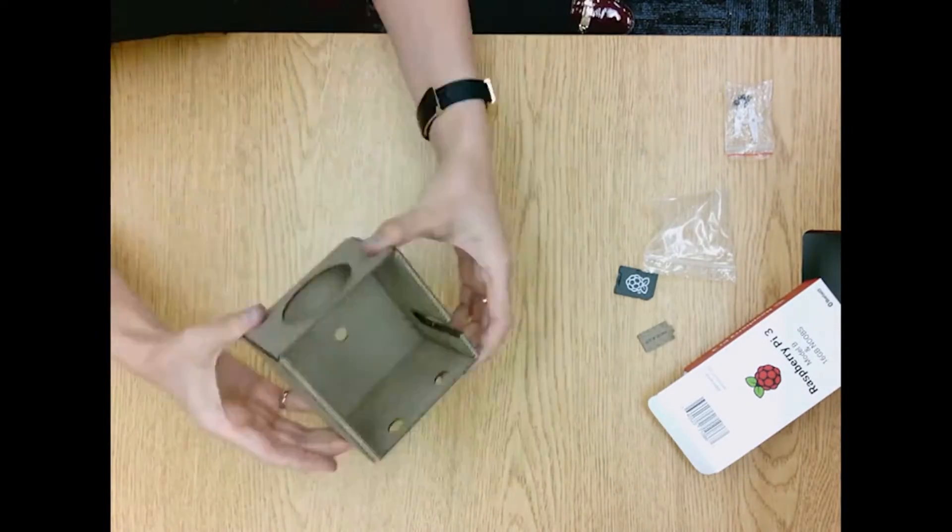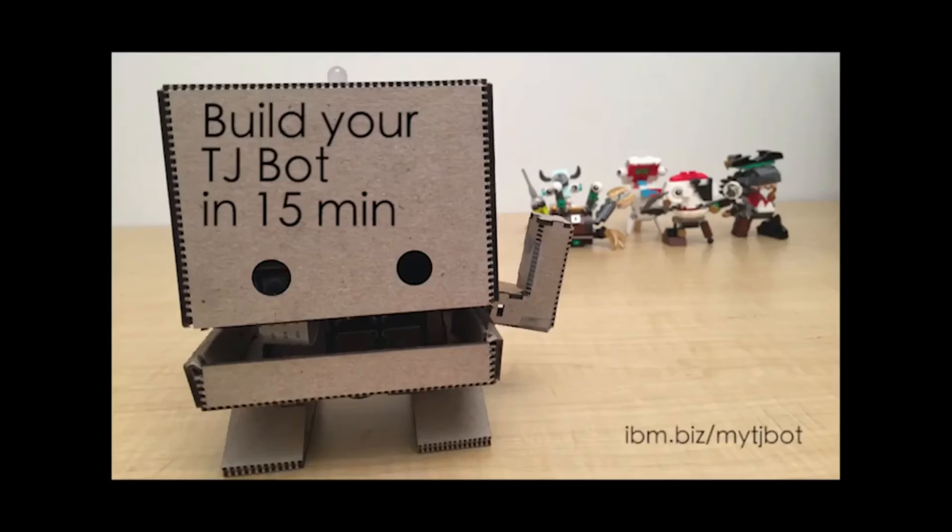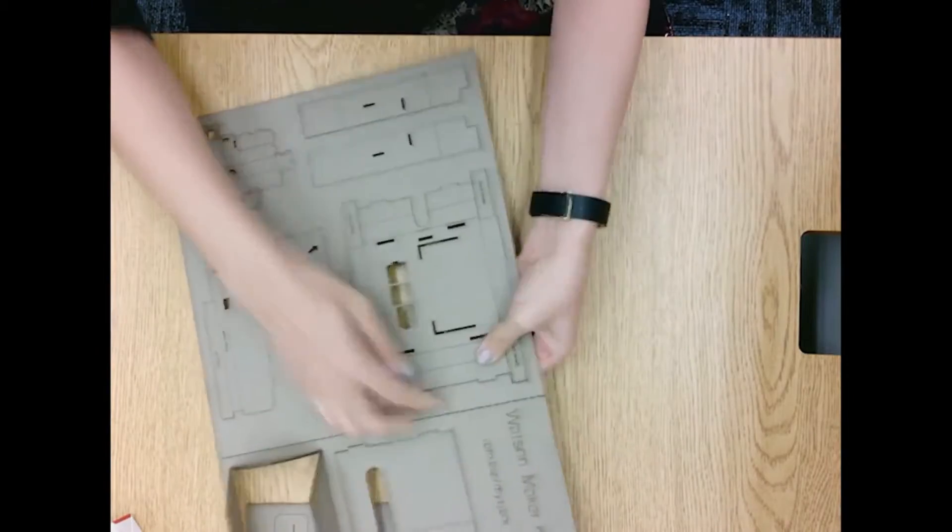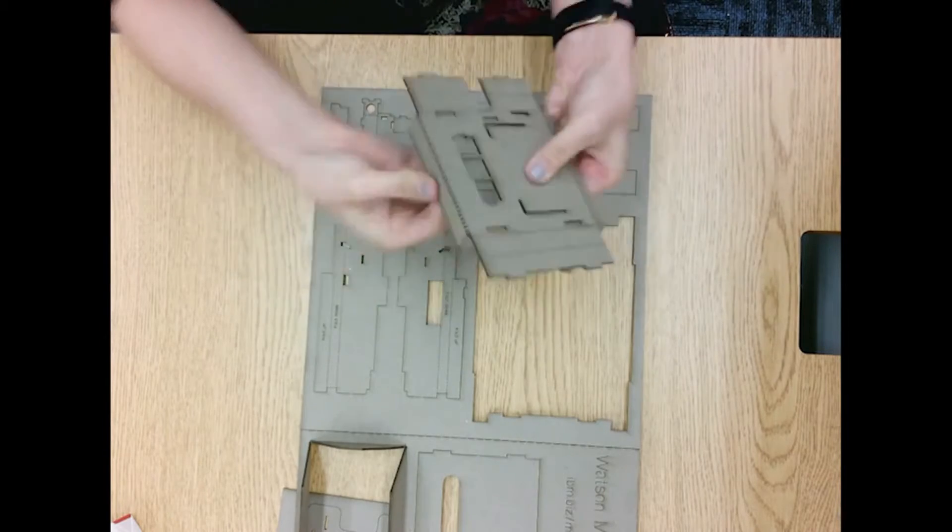TJ Bot is named after Thomas J. Watson, the first chairman and CEO of IBM. TJ Bot is a do-it-yourself kit that allows you to build your own programmable cardboard robot powered by Watson.